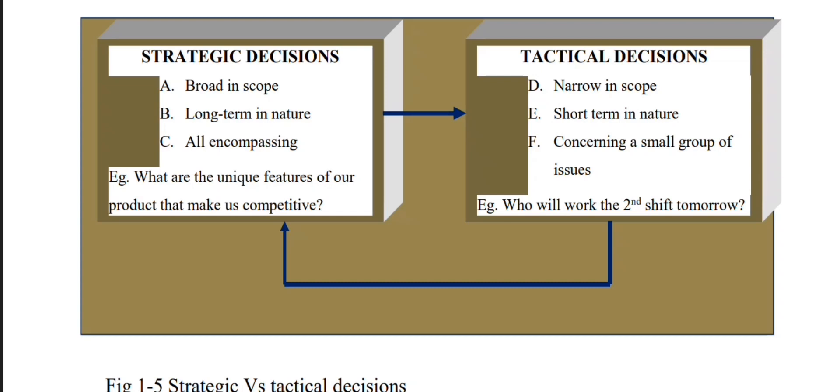To summarize: tactical decisions are short-term, narrow in scope, and concern a small group of issues, providing feedback to strategic decisions. Strategies are broad, wide in scope, and long-term, encompassing the whole organization. Strategic decisions are made first, then we move to tactical decisions. Long-term goals are addressed by strategic decisions.